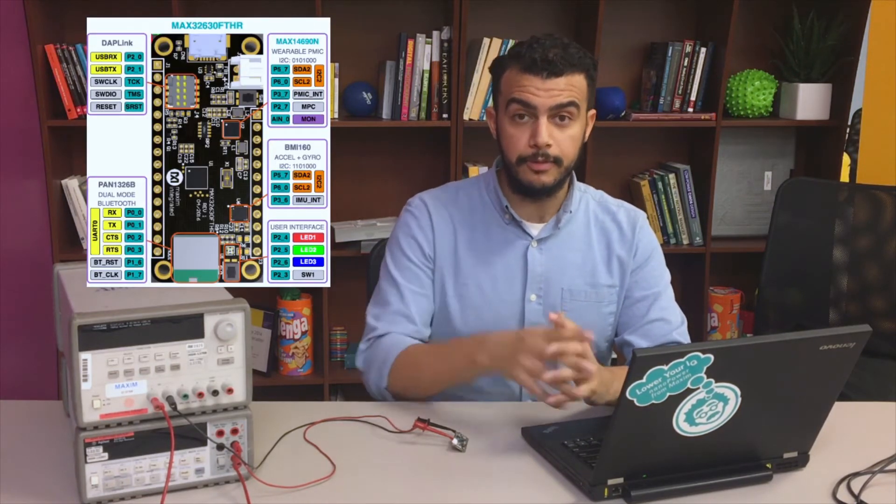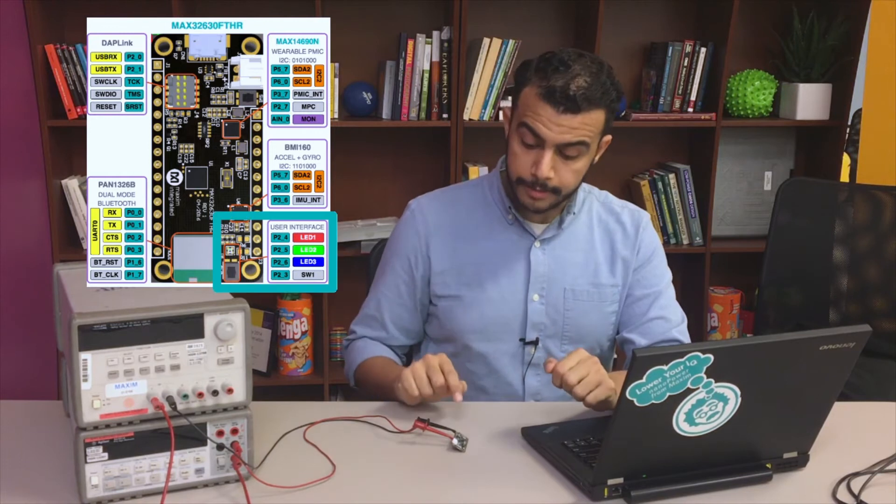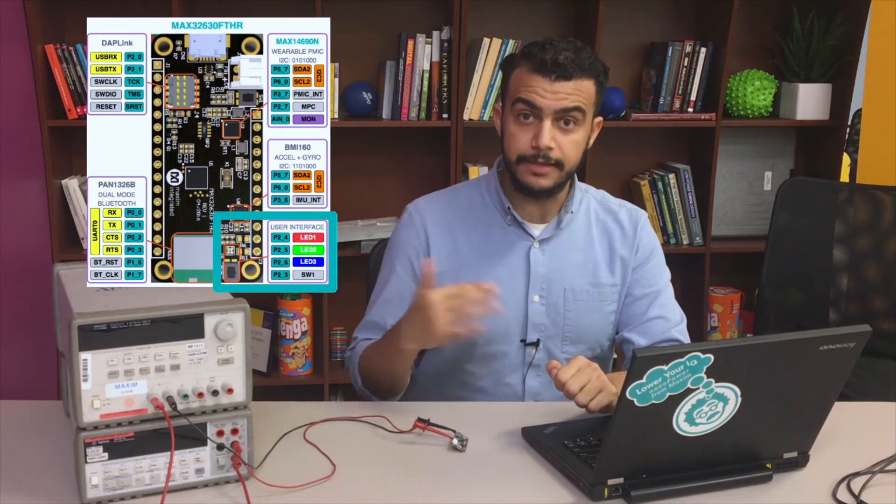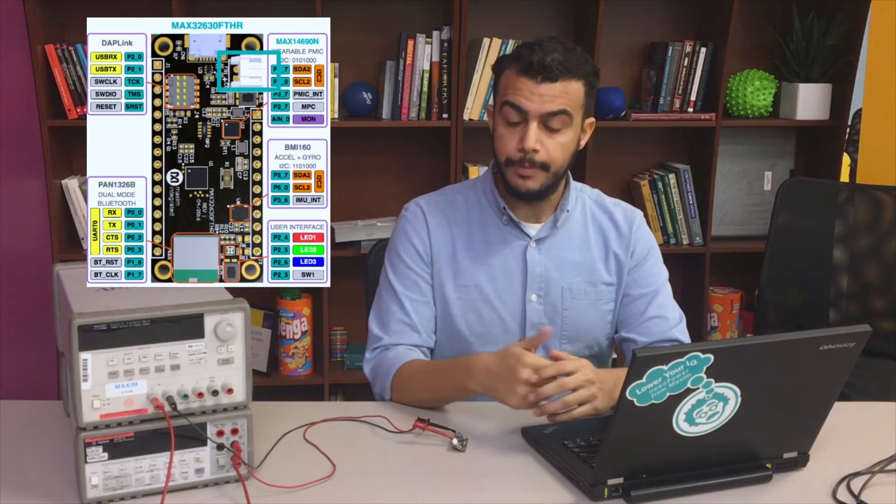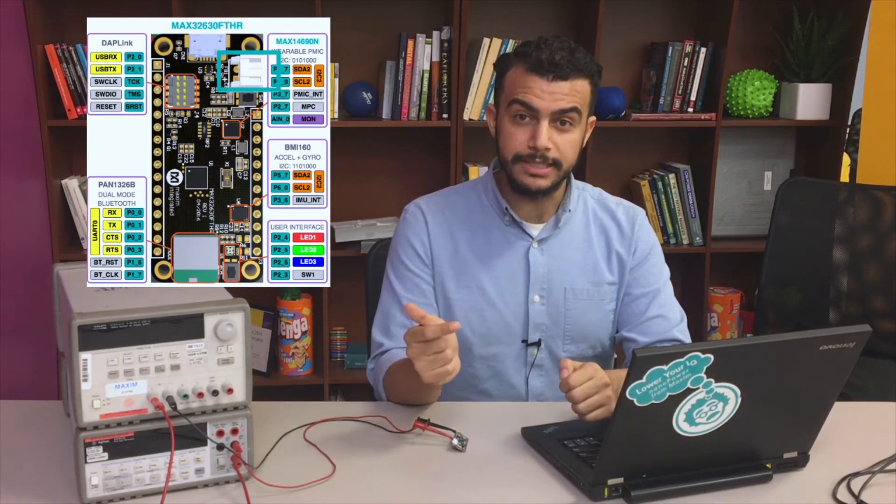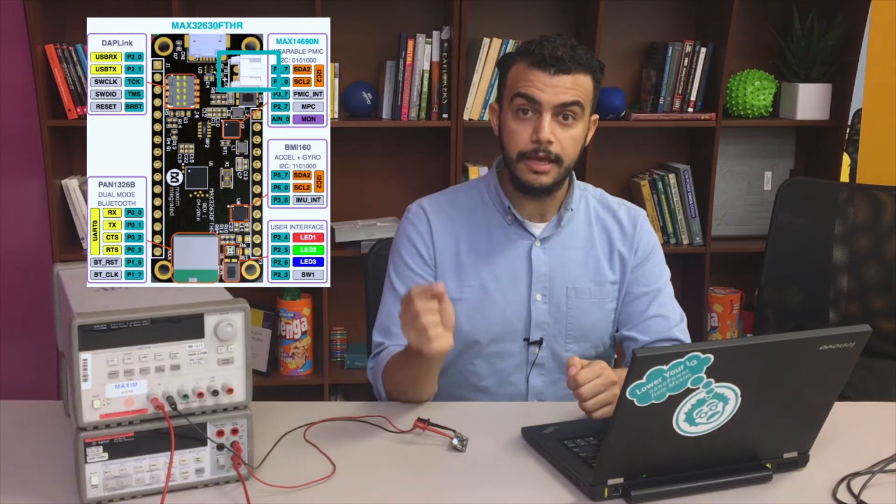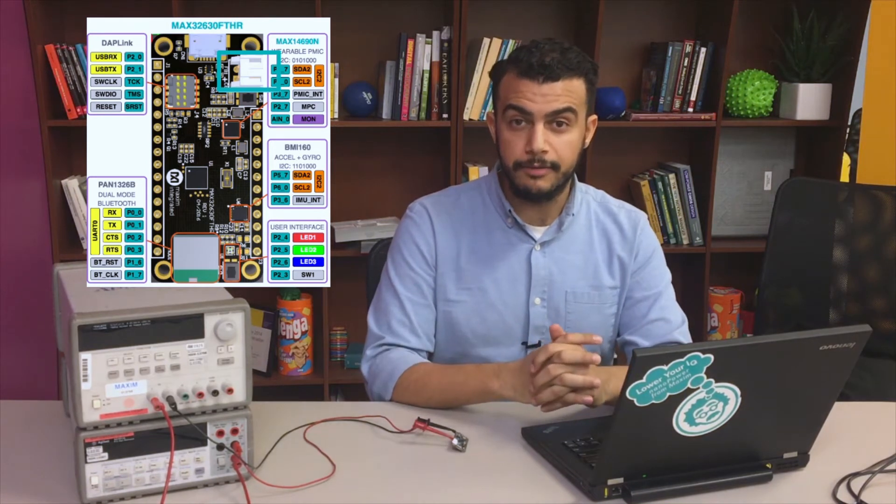For today's demo, I'll be using the MAX32630 Feather board by itself. I'll be using the onboard LED to display the different power modes that it's in, as well as the onboard push button to toggle in and out of deep sleep. I'll be applying a 3.7-volt input supply to the battery input, which is a typical rechargeable lithium-ion battery voltage, and I'll be monitoring the total current consumed using this digital multimeter.